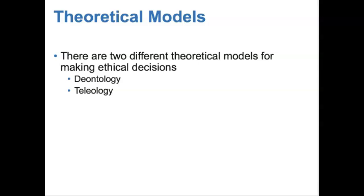There are two different theoretical models for making ethical decisions. The first, deontology, is based on absolutes. Many religions teach that the will of God is absolute and God provides instructions for living. These instructions give sufficient guidance for all situations and are not debatable. Under this theoretical model, appropriate actions are expected and imposed, and rules are not subject to discussion, interpretation, or violation. Personal satisfaction is not considered.